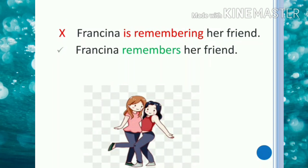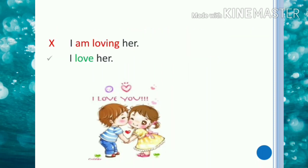'Francina is remembering her friend' is grammatically wrong because 'remember' is a verb associated with thinking and we have to avoid using it in continuous form. The correct usage is 'Francina remembers her friend.' Similarly, 'I am loving her' is incorrect because 'love' is a verb of emotion and we have to avoid using it in continuous form. The correct usage is 'I love her.'